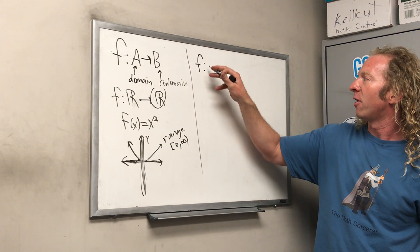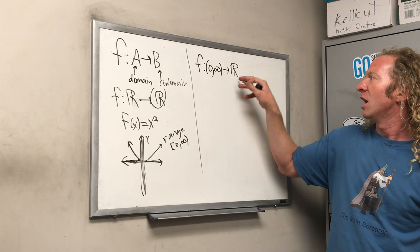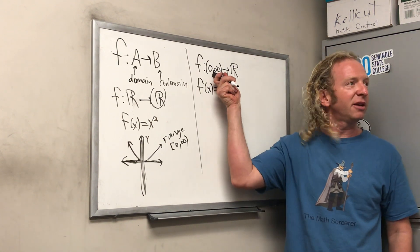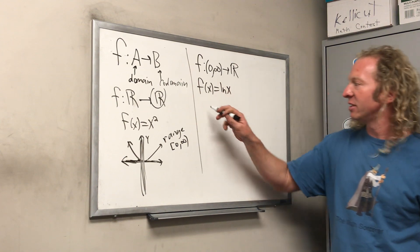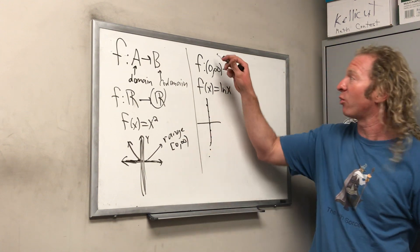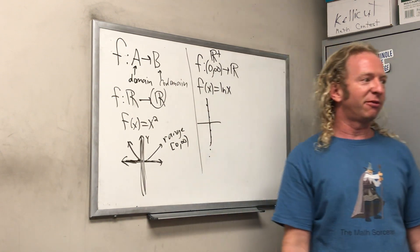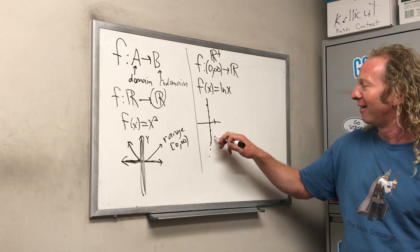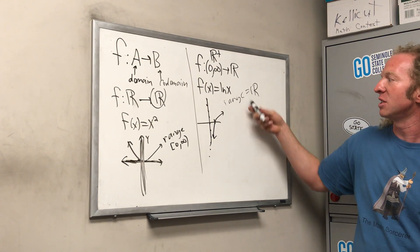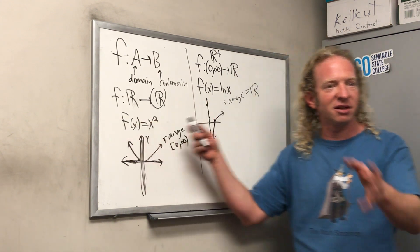Here's another example. Say we have f from ℝ⁺ (the positive real numbers — you can also write that as ℝ\ {0} or ℝ*) to the set of real numbers, defined by f(x) = ln(x), the natural log. In this case, ℝ⁺ is the domain and ℝ is the codomain. Looking at the graph of ln, the range this time is all real numbers — so the range equals the codomain. Therefore this is an onto function.